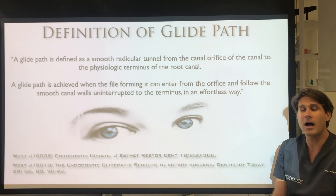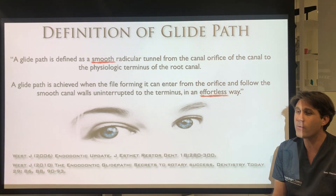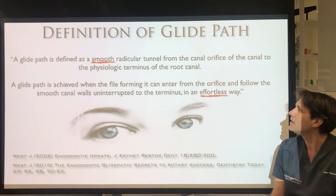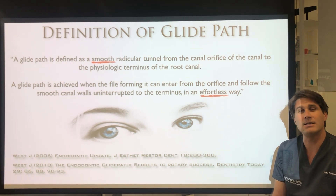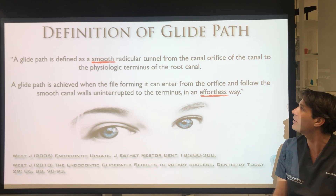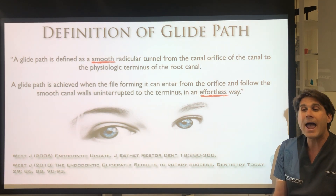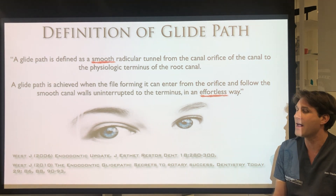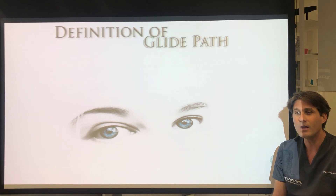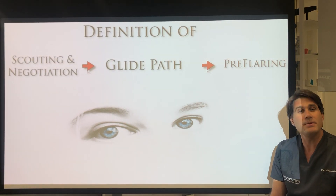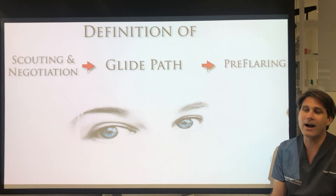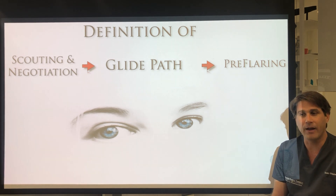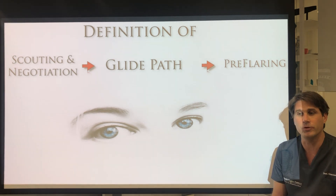Those terms are the ones we know well from the definition of GlidePath given by West, in which the GlidePath is defined as a smooth radicular channel from the canal orifice to the canal physiological terminus, and it must be obtained in an effortless way. When speaking about GlidePath, we also need to define the negotiation and scouting phase and the pre-flaring phase, to avoid confusion.